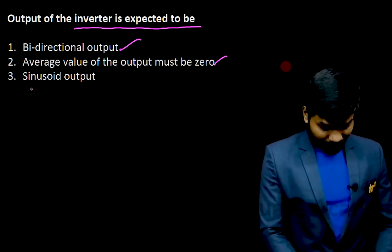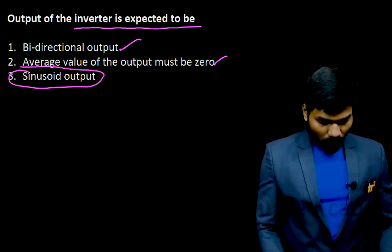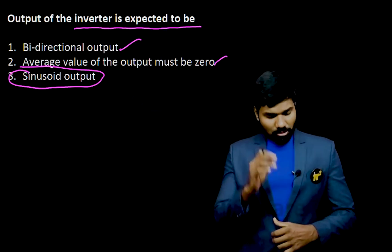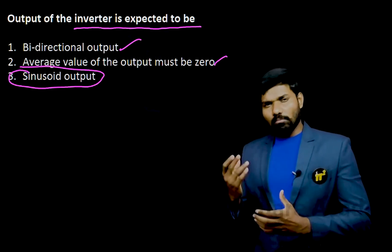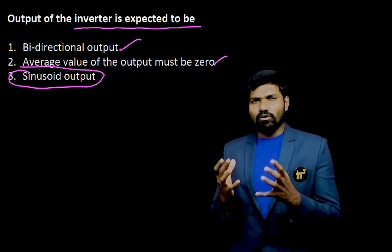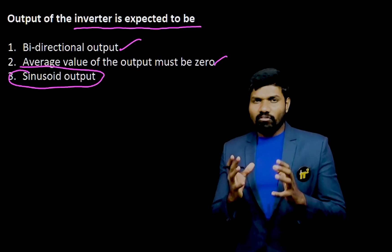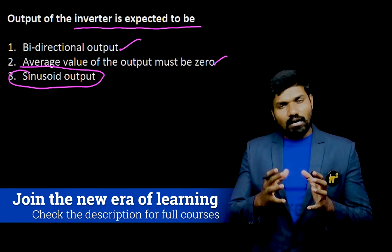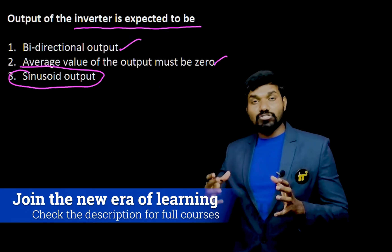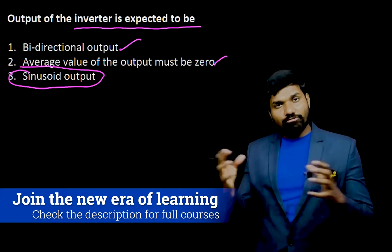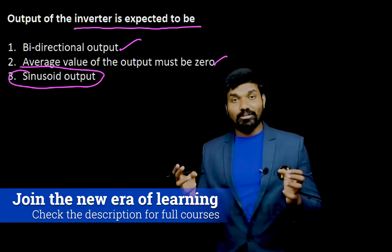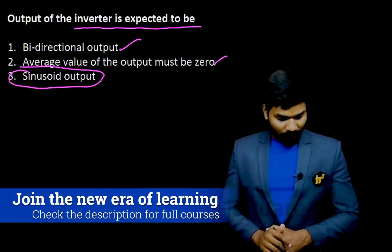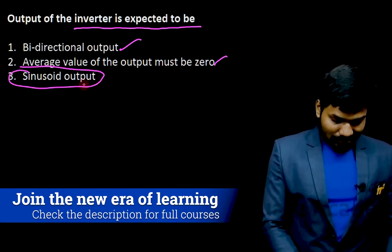The third and most important thing is sinusoid output. Whenever you go to market to buy an inverter, some inverters will be costing very little — maybe 2000 rupees — while the same capacity inverter from another company may cost around 6000. There will be a huge difference. Why? That also I'll explain very shortly. This sinusoid output is the third important aspect.